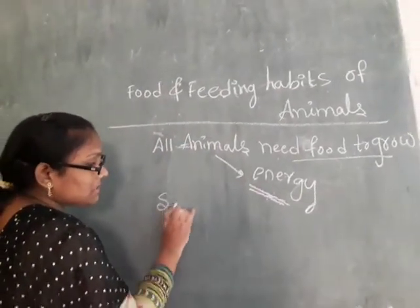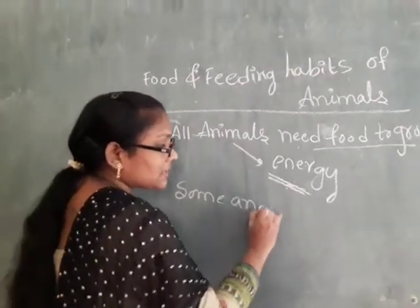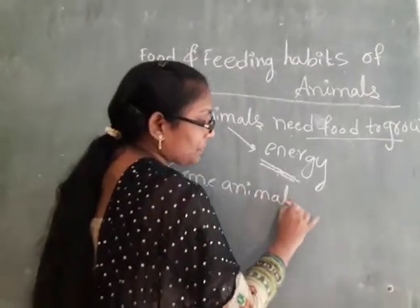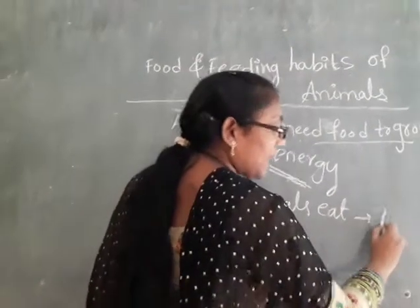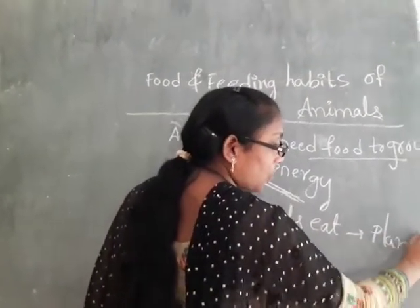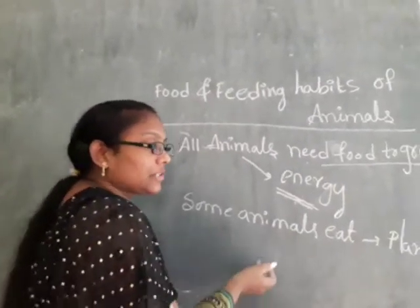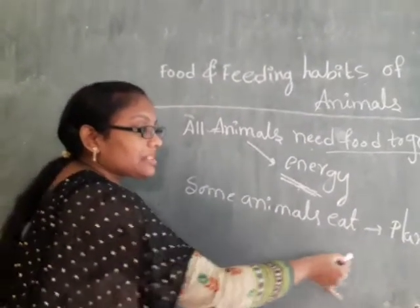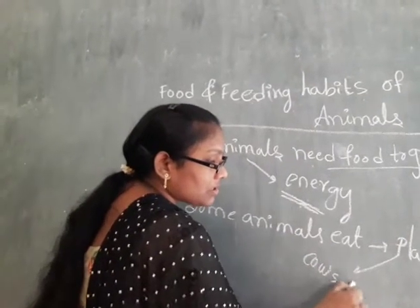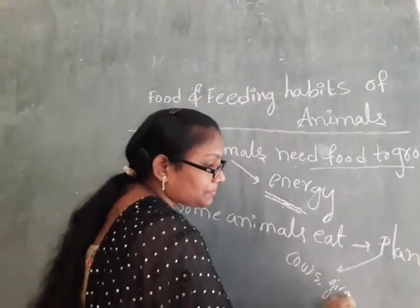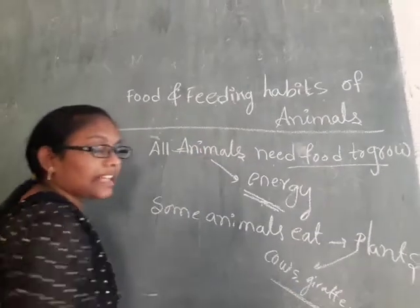Some animals eat plants — only plants. You know which animals eat plants? Cows, buffaloes. These animals eat only plants.